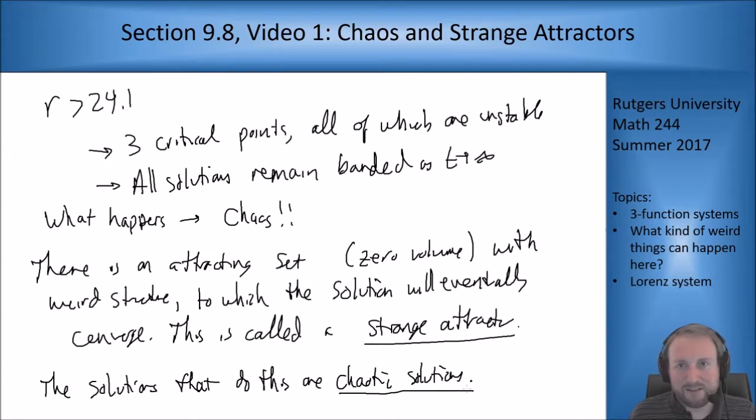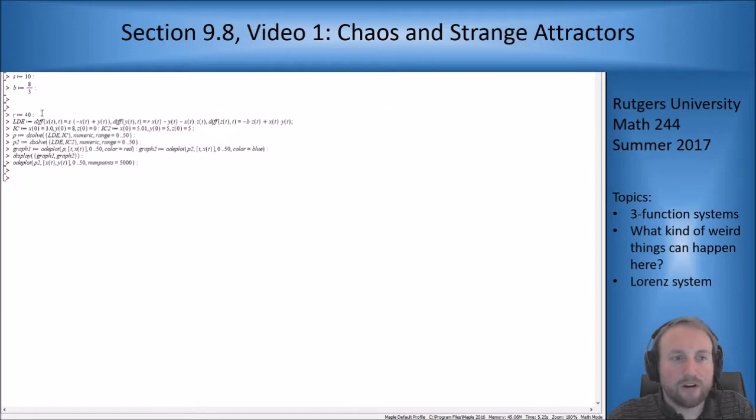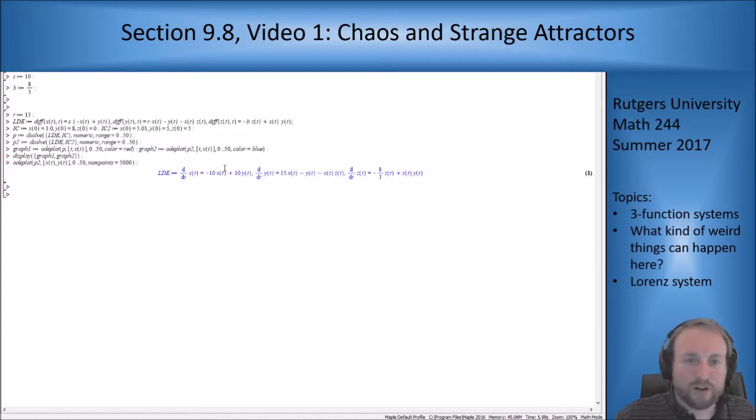So again because it's chaotic it's hard to do anything by hand, so we're going to jump to Maple and look at some Maple stuff to see what this looks like. So here's Maple code that's going to set up the exact problem here. I have the LDE system which is my Lorenz equations. I set my value sigma, my value b, and my value r here. Let's set r to be 15. There's our equations and now I want to see what happens.